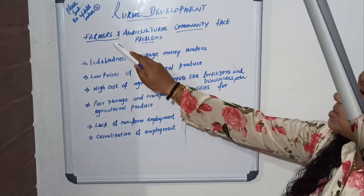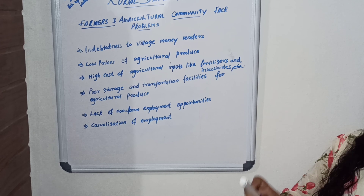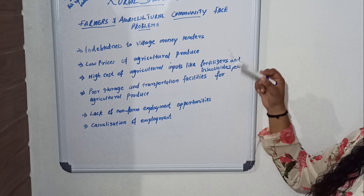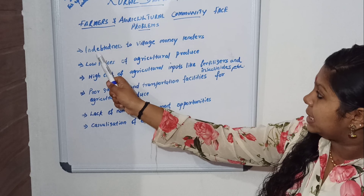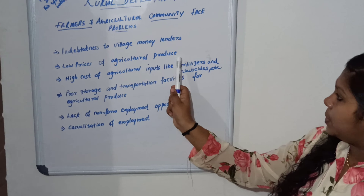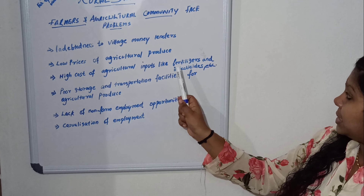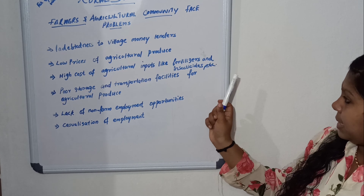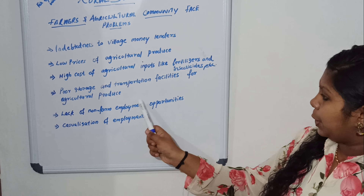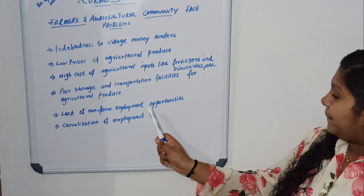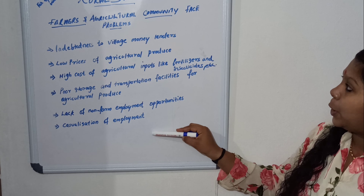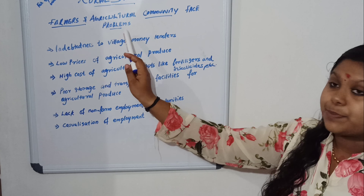First heading: farmers and agriculture community face problems. This is the heading. The main points are: dependence on village money lenders, low price of agriculture produce, high cost of agriculture inputs like fertilizers and insecticides, poor storage and transportation facility for agriculture produce, lack of modern employment opportunity, and casualization of employment.